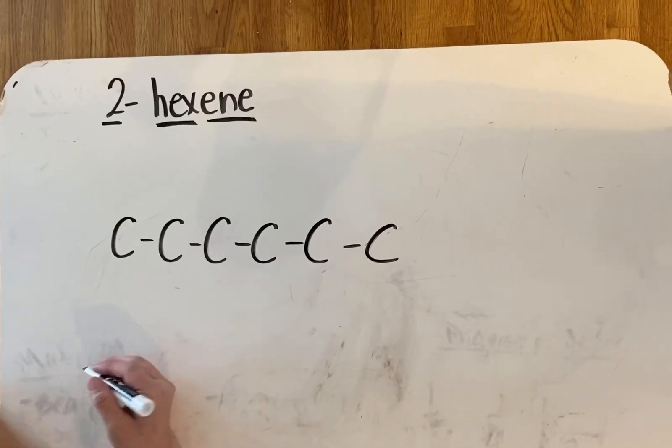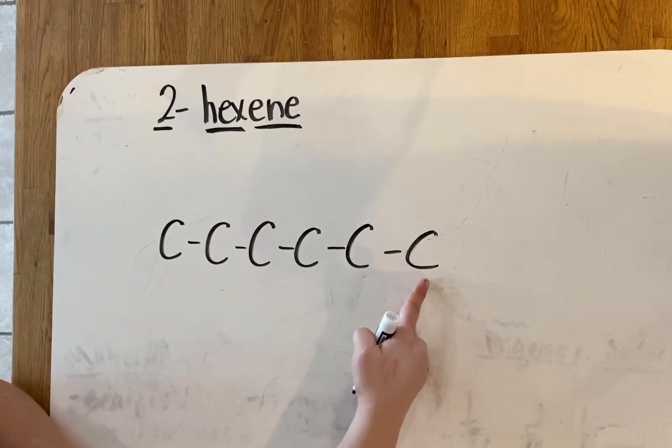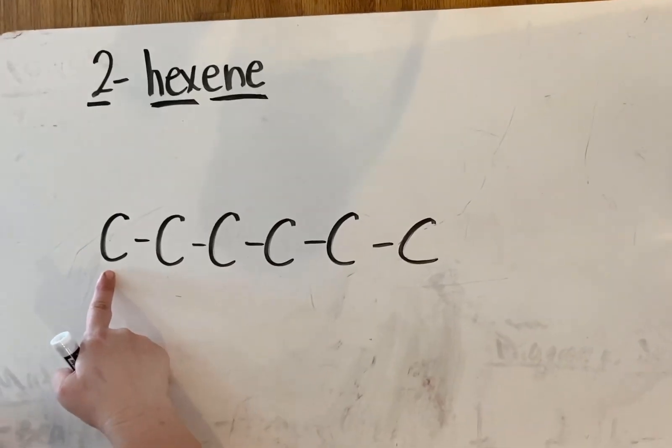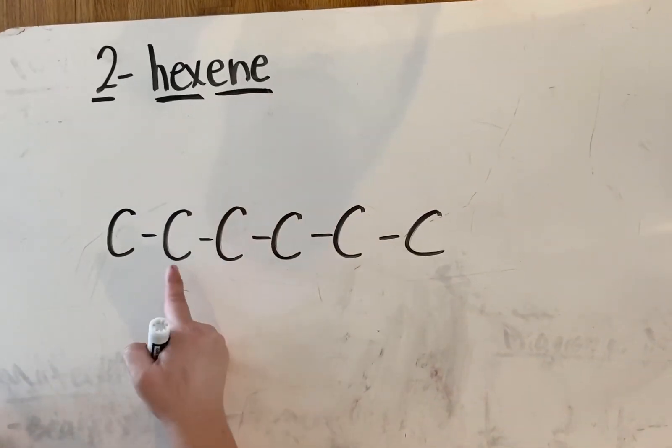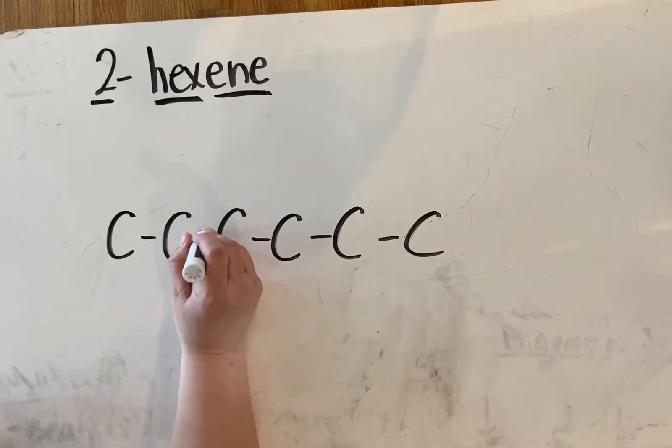Now this is where your choice comes. I could call this carbon number one or I could call this. It is up to me. If I call this carbon number one, then the hexene, this -ene piece has to start on carbon number two. Here's carbon number two. My double bond would go right there.